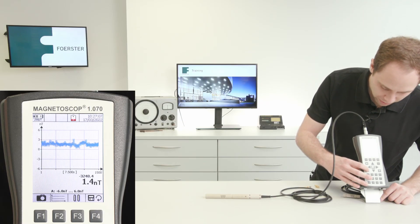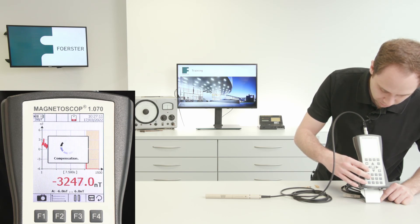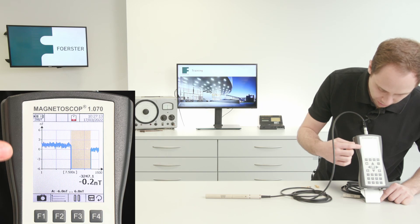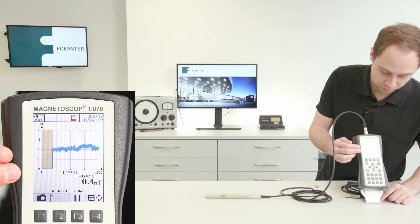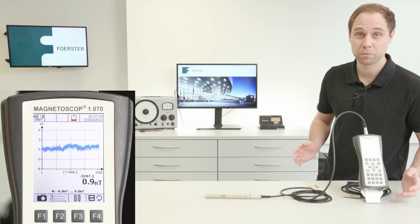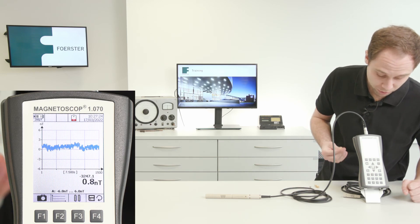Before we start, we should make a zero compensation. Press this button. We make a compensation, and then we should have zero nanotesla on our view. Sure, we still have some disturbing influences, but it is enough for good measurement quality.